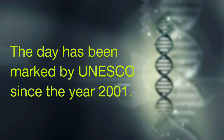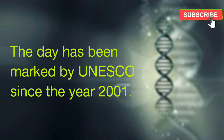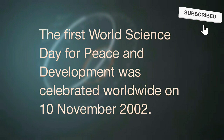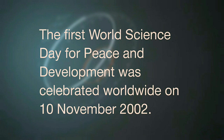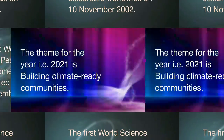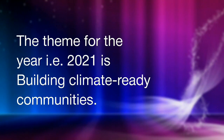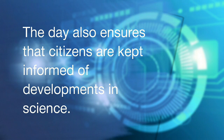The day has been marked by UNESCO since the year 2001. The first World Science Day for Peace and Development was celebrated worldwide on 10 November 2002. The theme for the year 2021 is Building Climate Ready Communities. The day also ensures that citizens are kept informed of developments in science.